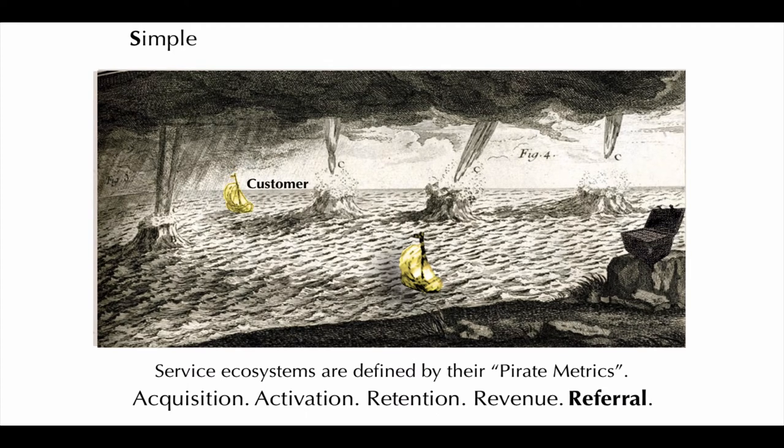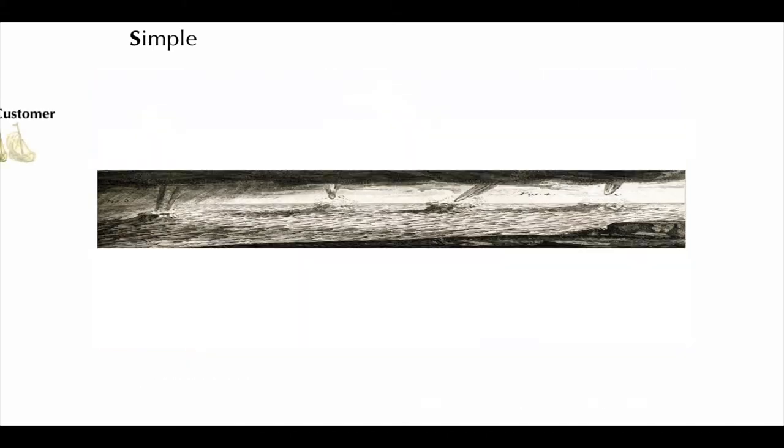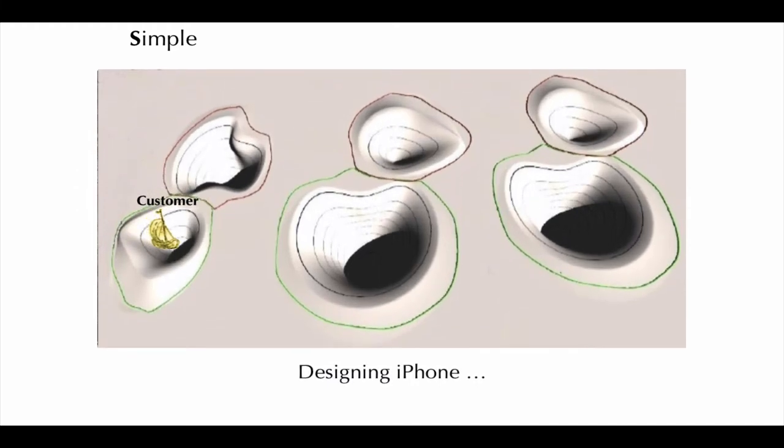Referral isn't just net promoter score. It's a value stream whose function is to cause one customer to bring another into the ecosystem. Every one of these value streams has a dark side. When we talk about unhappy paths in testing, we generally mean defects and deviations from the spec, but the real unhappy paths are leaking customers to other ecosystems.